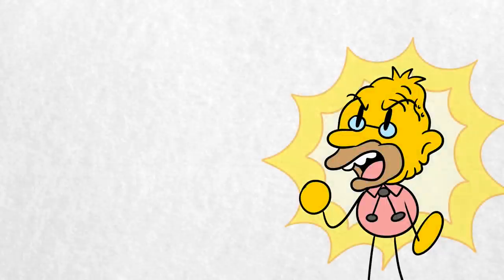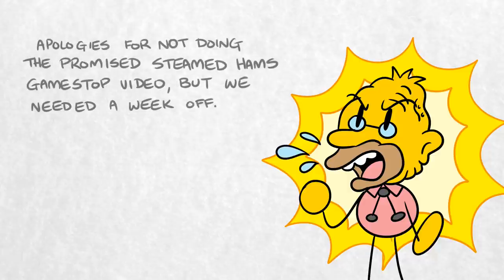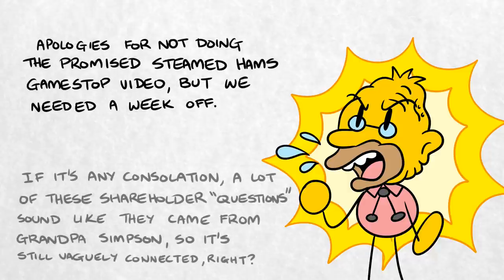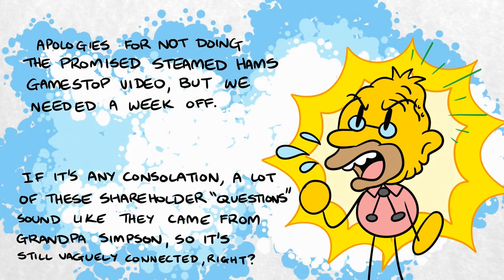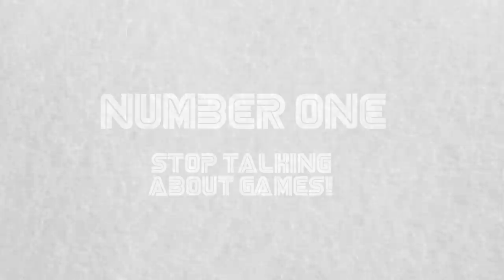These are serious investors who, when given the chance to ask the company's president a question, will complain about the food in the cafeteria? Here, then, are five weird questions asked in Nintendo shareholder meetings. Number one, stop talking about games.